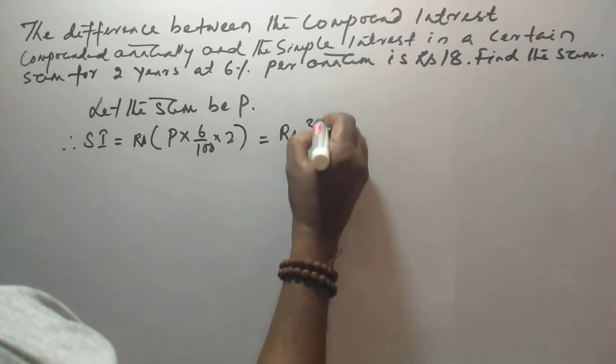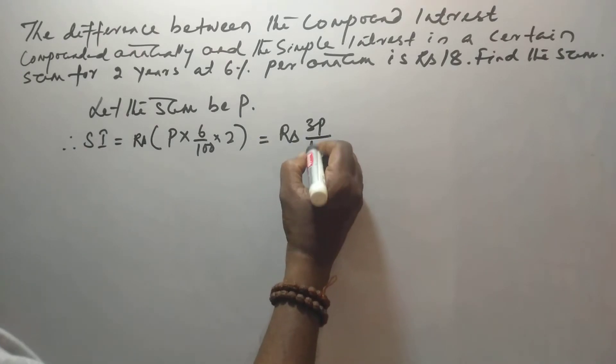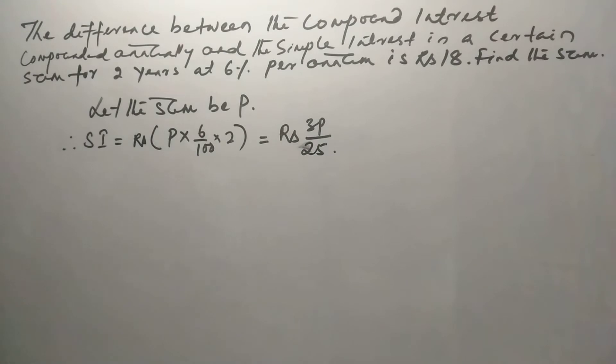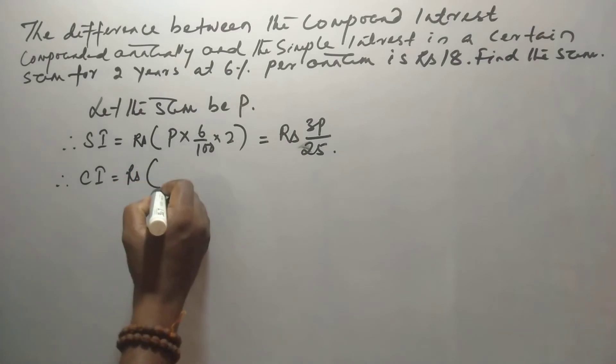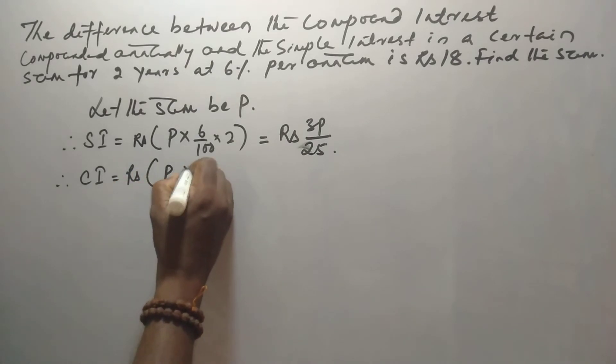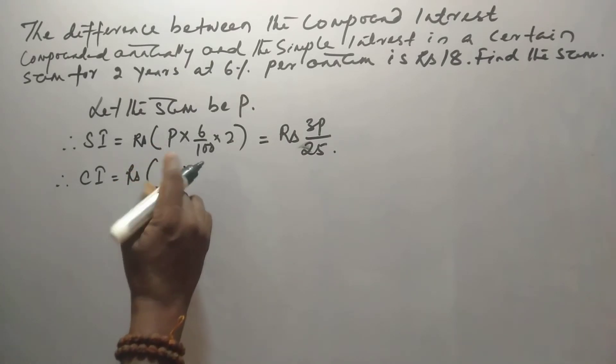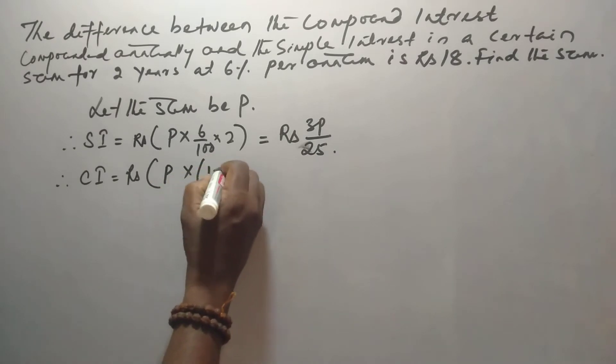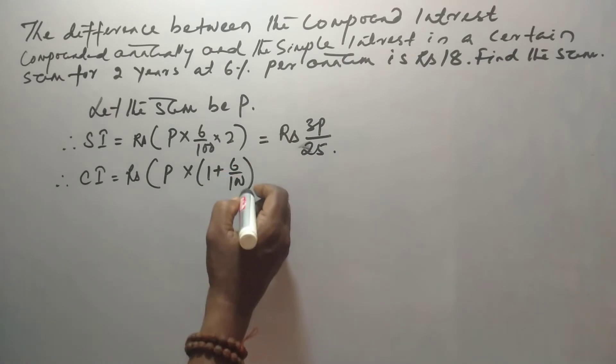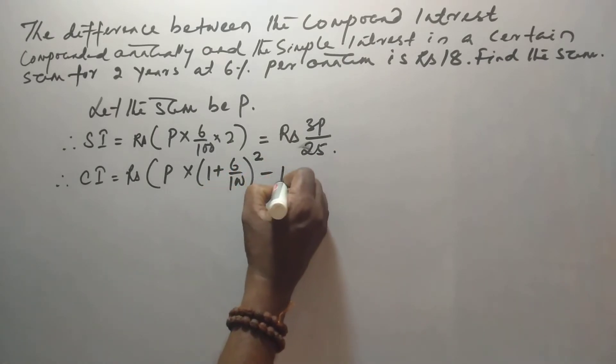3P by 25. And the compound interest is Rs. P into 1 plus 6 by 100 whole to the power 2 minus P.